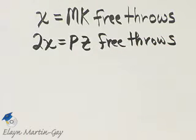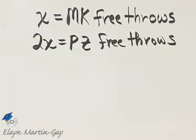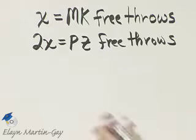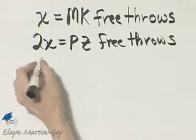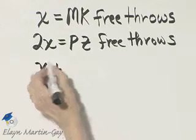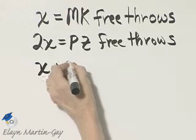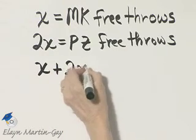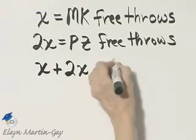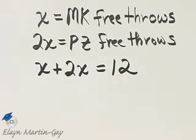Now let's move on and try to translate to an equation. We're told that the total number of free throws made by both women was 12. Total number would mean I'd take this number, add to it her number of free throws, and that total is 12.